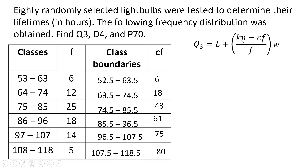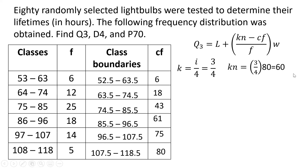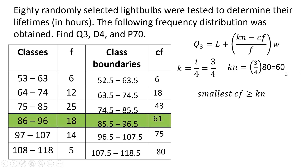Next, we find k and kn. Since this is quartile 3, k = i over 4 = 3 over 4. To find kn, multiply k by the total frequency of 80: 3 over 4 times 80 equals 60. We need to find the class containing the 60th observation, which is the smallest cumulative frequency greater than or equal to 60. That is 61, so that class contains the 60th observation.